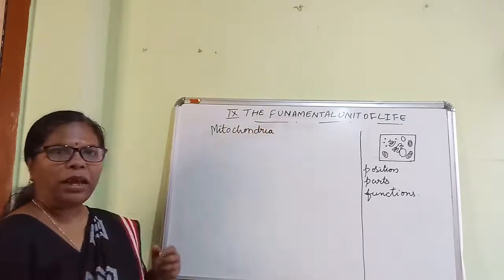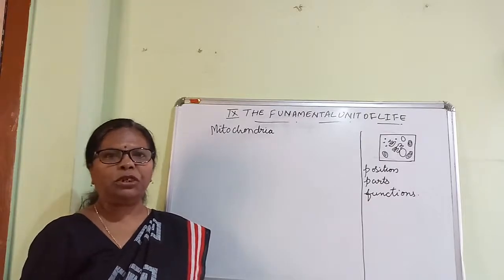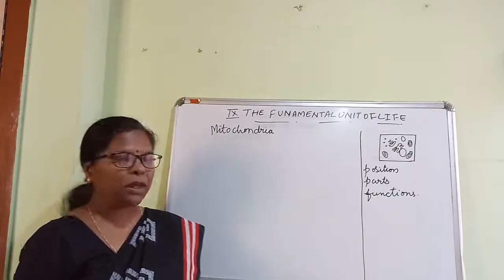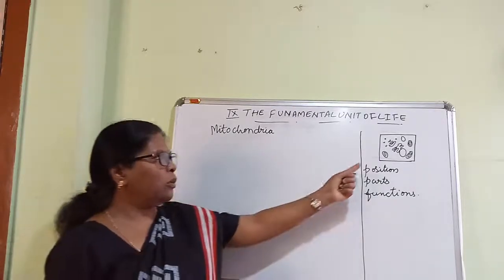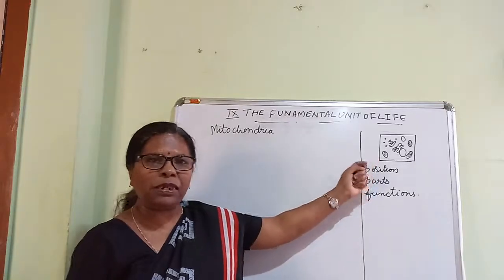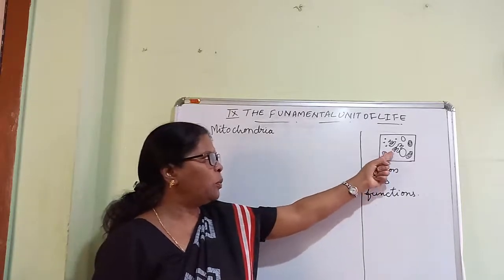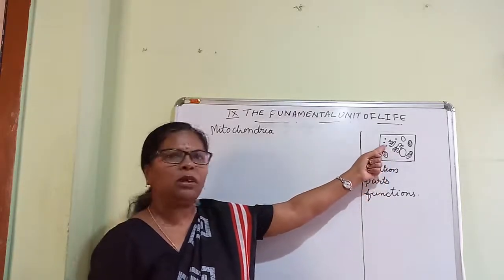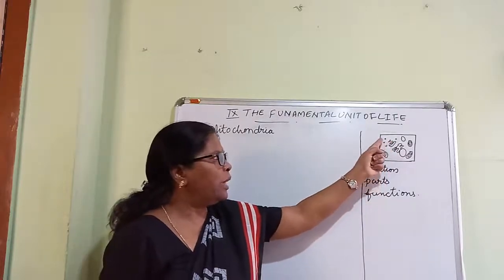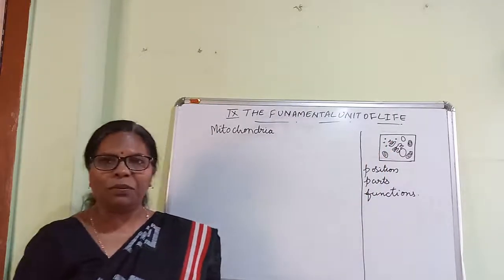So as usual, we try to know where mitochondria will actually be present in the cell. Children, if you look into this diagram of the cell, you can see nucleus, endoplasmic reticulum, Golgi complex, and lysosomes, which we have already covered.